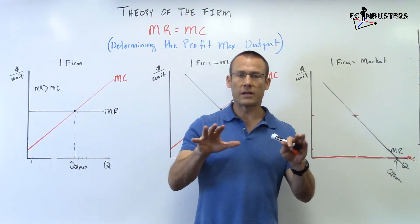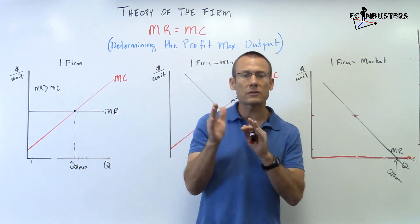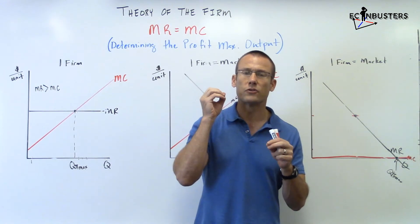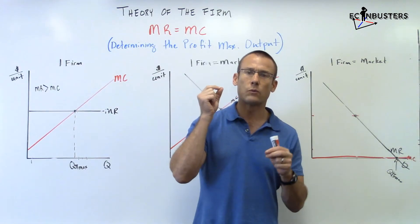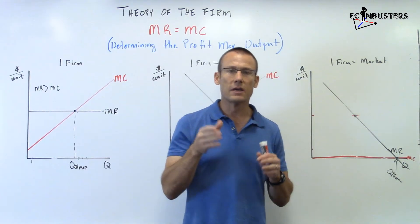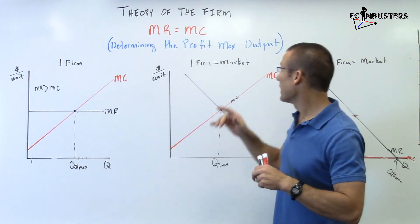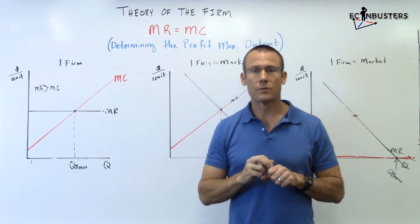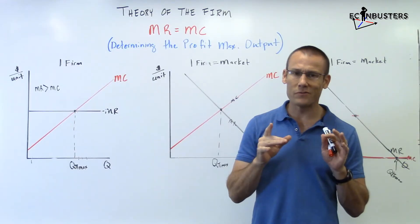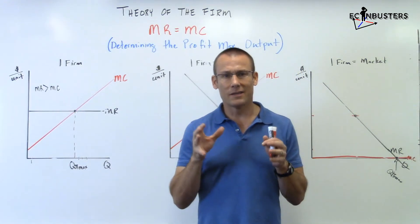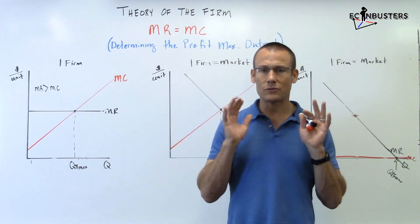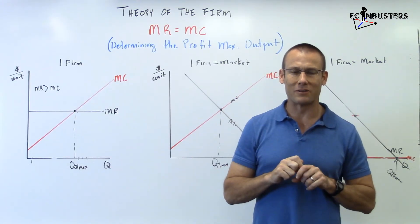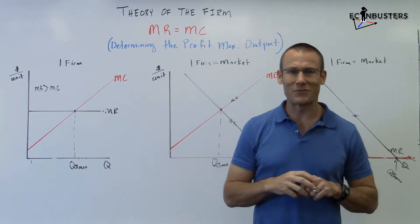That's the key. If your additional revenue for that next good exceeds your additional cost, produce it — because you are adding to profits and we are profit maximizers. As long as MR is bigger than MC, you are moving towards profit maximization. This marginal analysis is super important for all of economics, and we see it applied right here with MR equals MC. Thanks for tuning in. We'll see you in the next video.